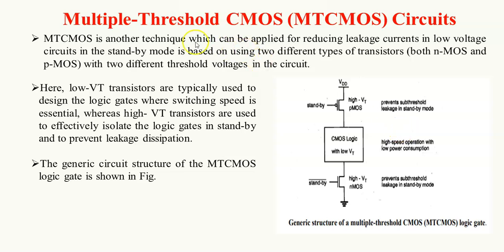Next, we move to the multiple threshold CMOS circuit, that is MTCMOS. In the MTCMOS circuit, to reduce leakage current, we utilize two different types of transistors for both NMOS and PMOS with two different threshold voltages. In the previous VTCMOS case, we used the substrate bias control circuit, which increases overall area. To avoid this, we use multiple threshold voltage by using two different threshold voltage transistors connected to the low threshold voltage circuit.